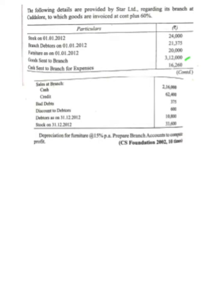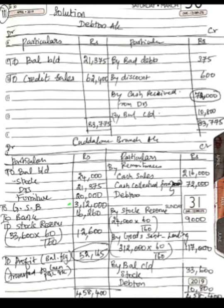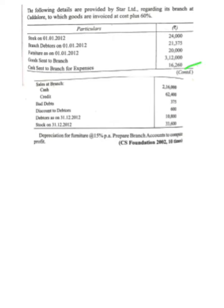Opening stock as of April: 26,000 — record on the debit side. Goods sent to branch: 3,12,000 — record 3,12,000 on the debit side. Write the full form 'goods sent to branch,' not the abbreviation. Cash sent to branch for expenses: 16,260 — record on the debit side as 'to bank: 16,260.'